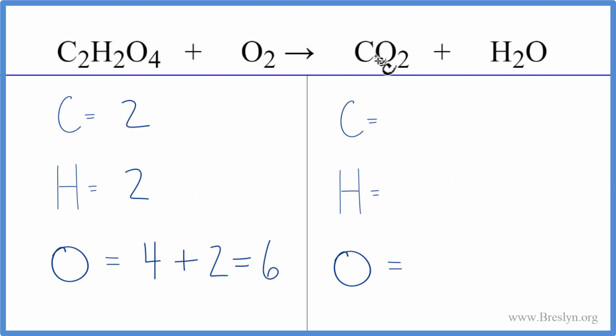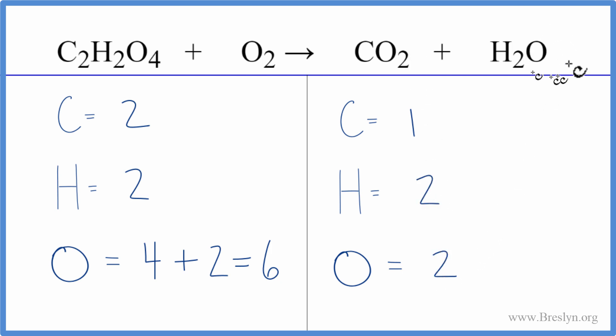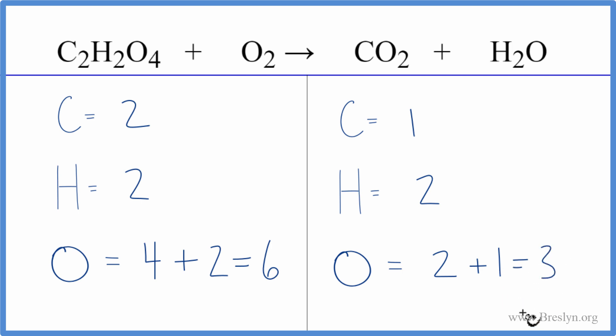On the product side, we have one carbon, two hydrogens, and two oxygens. And again, we have an oxygen out here — we need to count that as well. That gives us three oxygen atoms.